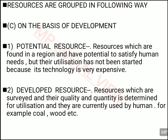You can also classify resources on the basis of development — how much the resource has been developed in the present day. On this basis, resources fall into four categories. The first is potential resources: these have the capacity to be used but the technology to use them is extremely costly, so we are not using them in large quantities. Developed resources are those we are currently using in large quantities — we know their quantity and quality, we have done surveys and mapping, and we use them abundantly, like coal and wood.